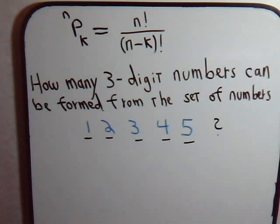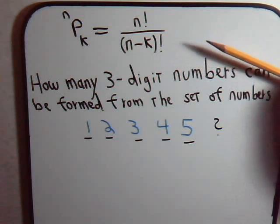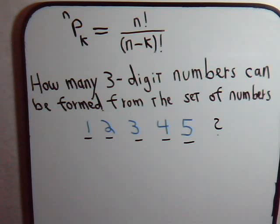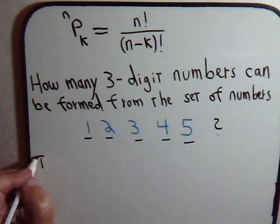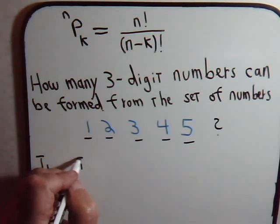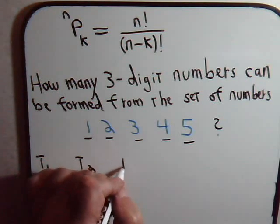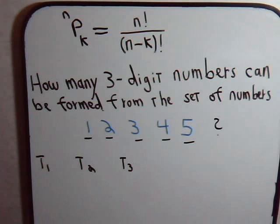And how many of those numbers will be even? Now we know what our formula is, our general permutation formula, but let's take this from the top and solve this problem first by using just the general counting principle. So we have, let's select three numbers. We can think of having three tasks to perform: task T1, T2, T3.